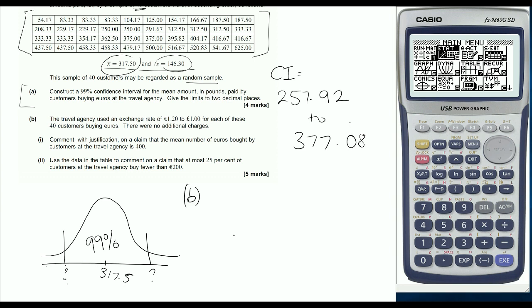For part B, we're asked to comment with justification whether the mean number of euros is 400. A lot of students made mistakes on this one because they didn't realise that we actually had to use the confidence interval. We're told we're after the mean being 400. Our confidence interval here is in pounds.